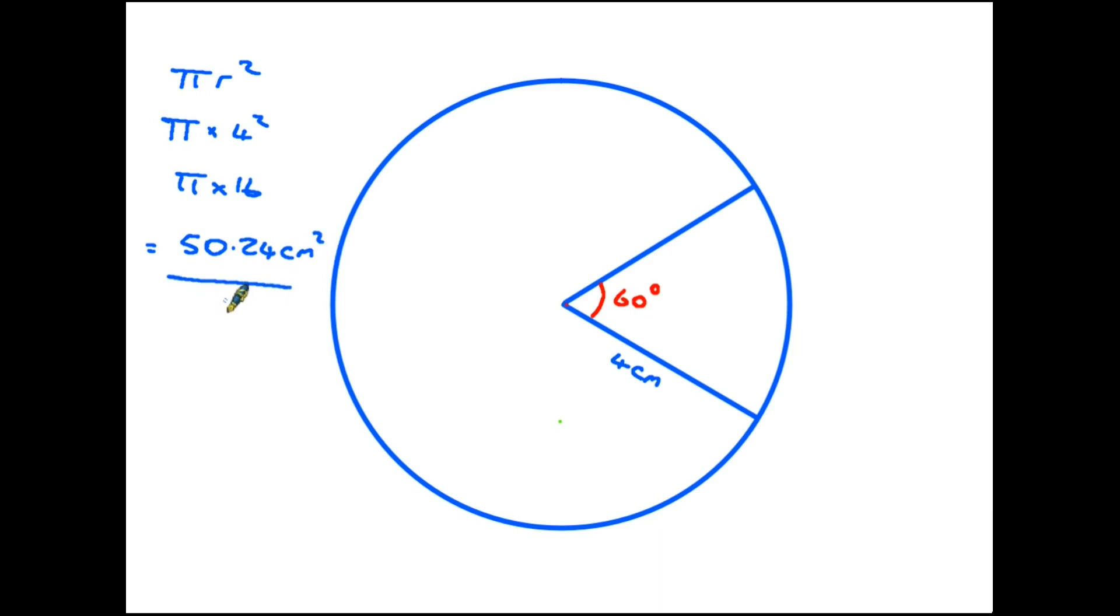So that's the area of the whole circle. I am only wanting the area of this sector here. Therefore I work it out as a fraction of the whole circle. We know that a whole circle is 360 degrees, so as a fraction it will be 60 over 360 - 60 degrees out of a full circle. So we would multiply that by 50.24 and that would give us the area of the sector. In this case it works out as 8.37 centimeters squared to the nearest two decimal places.